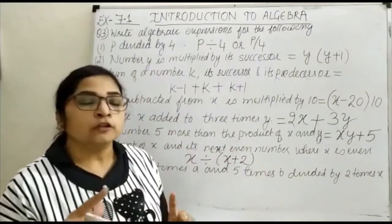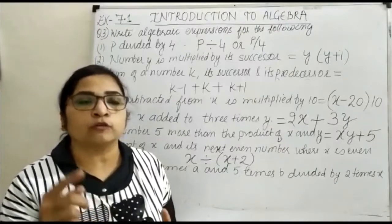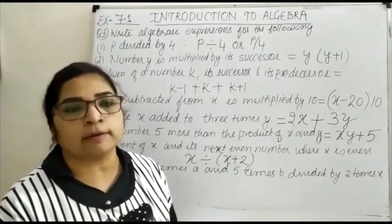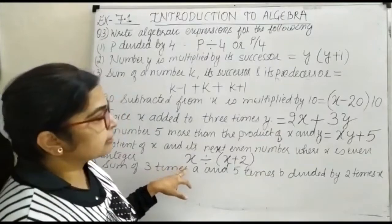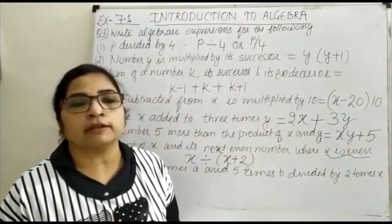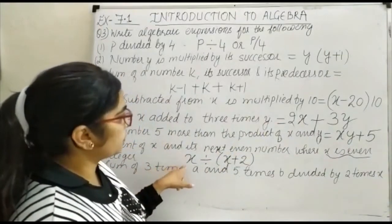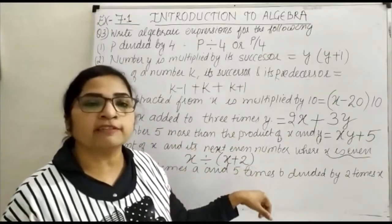See, if 2 is an even number, then the next even number is 4. To get 4 from 2, you add 2. In the same way, if x is given as an even integer, its next even integer will be x plus 2. And we have to find the quotient, that is x divided by (x + 2).